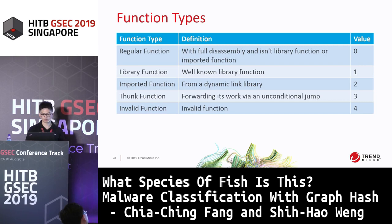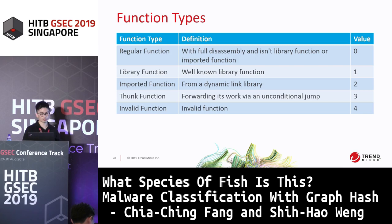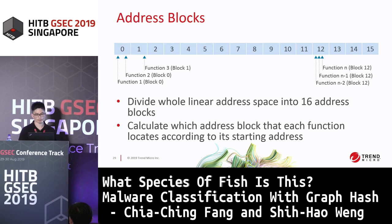For function type, we reference five types from BinExport. BinExport is a sub-project of BinDiff. The five types include: regular function, library function, imported function, and embedded function.